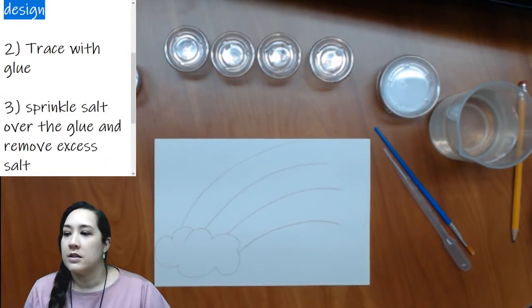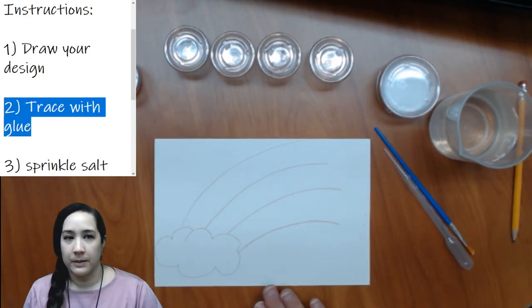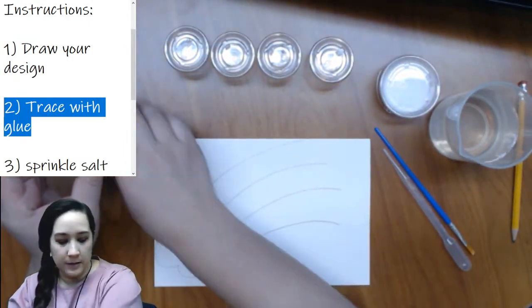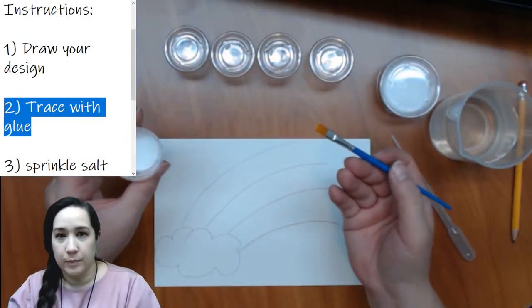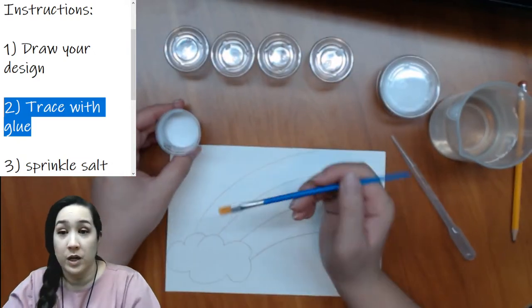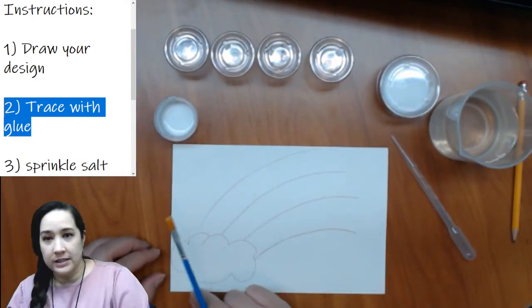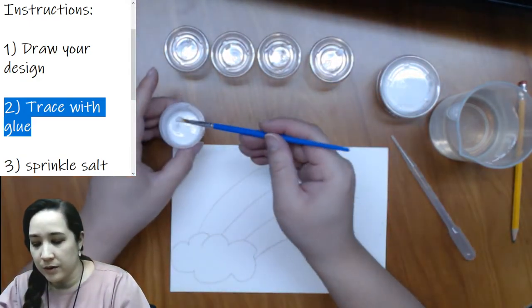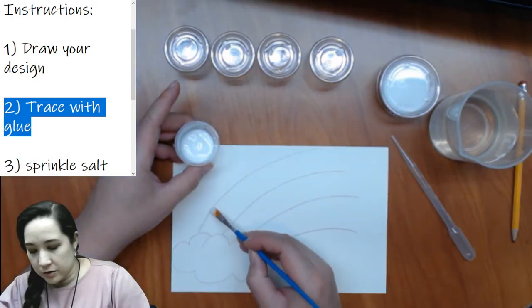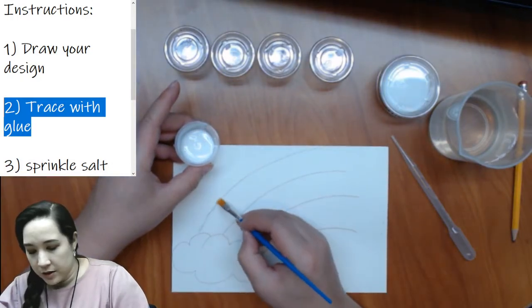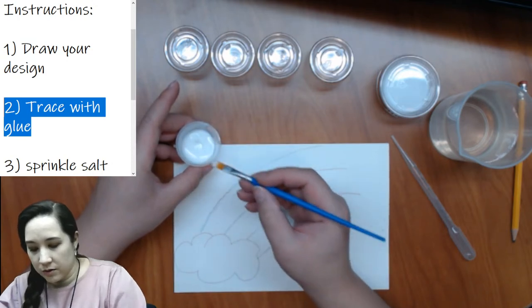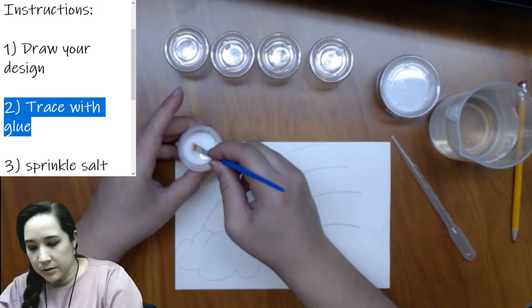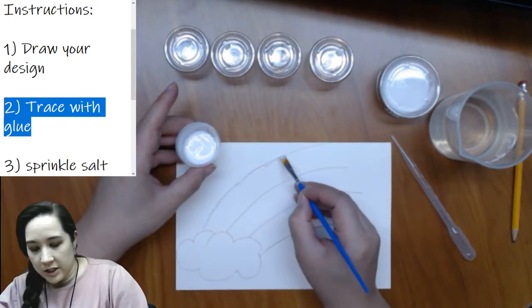Now of course you don't have to draw what I'm drawing. If you want to draw a flower maybe, or maybe some animals, I saw a couple people draw a tree with a little pond. So you can draw whatever you want, but I would keep it simple because our next step would be to trace over our picture with some glue.